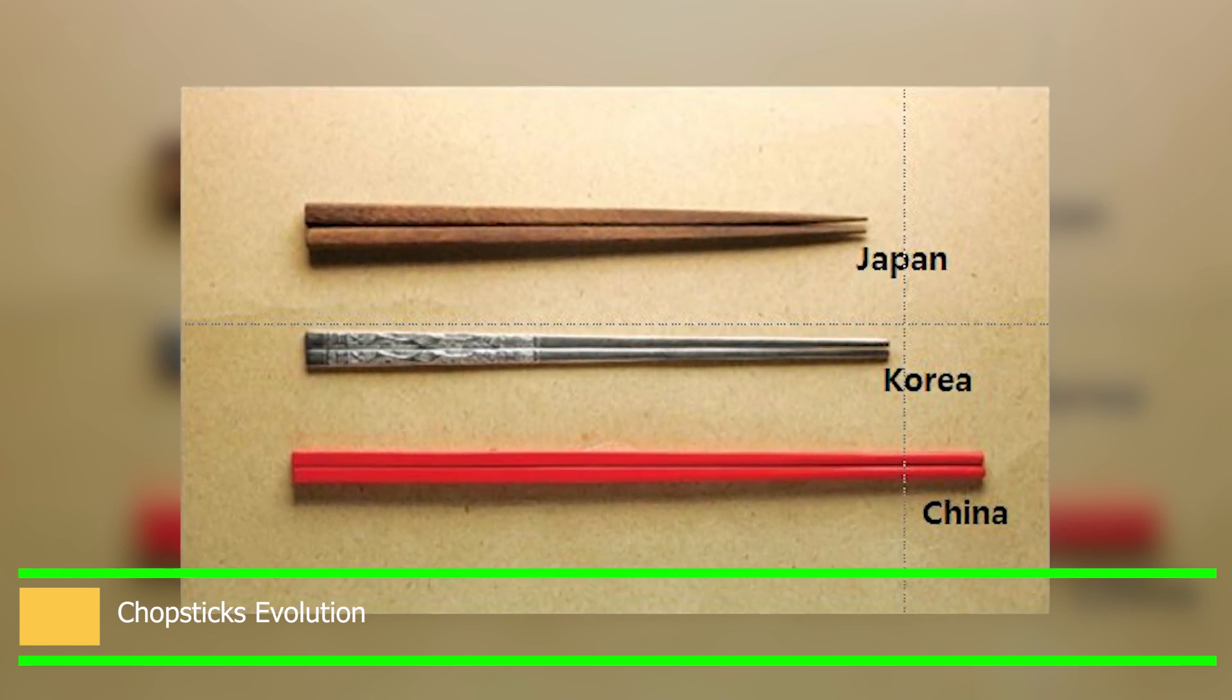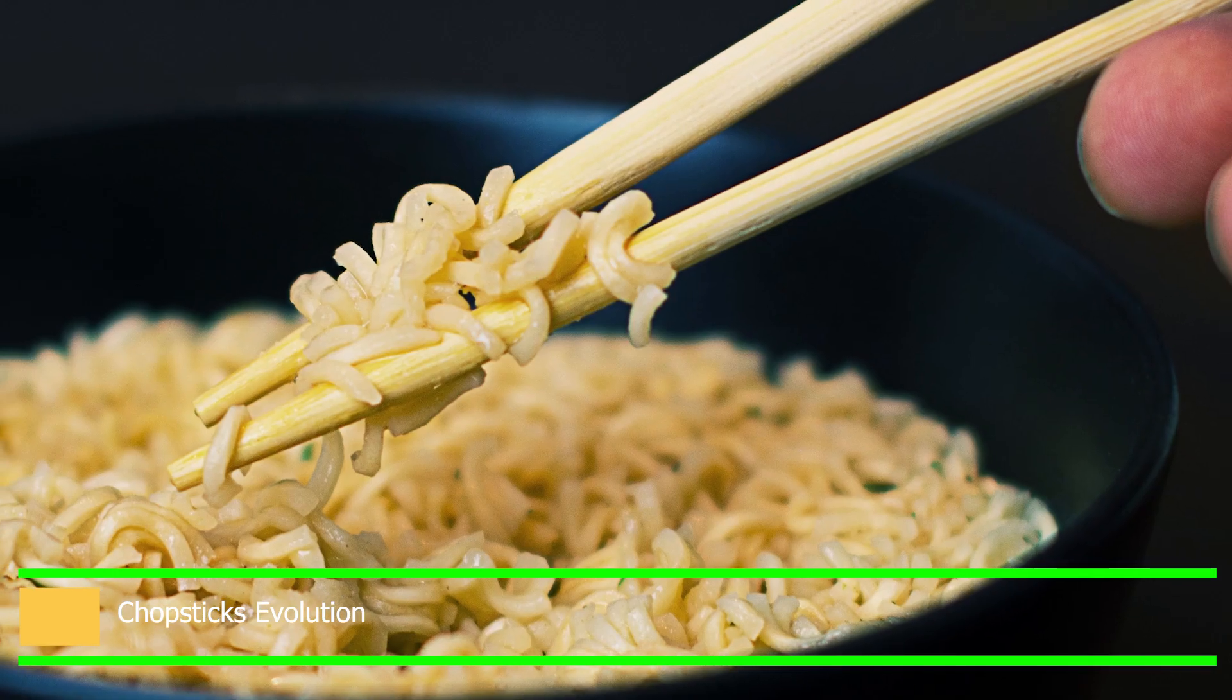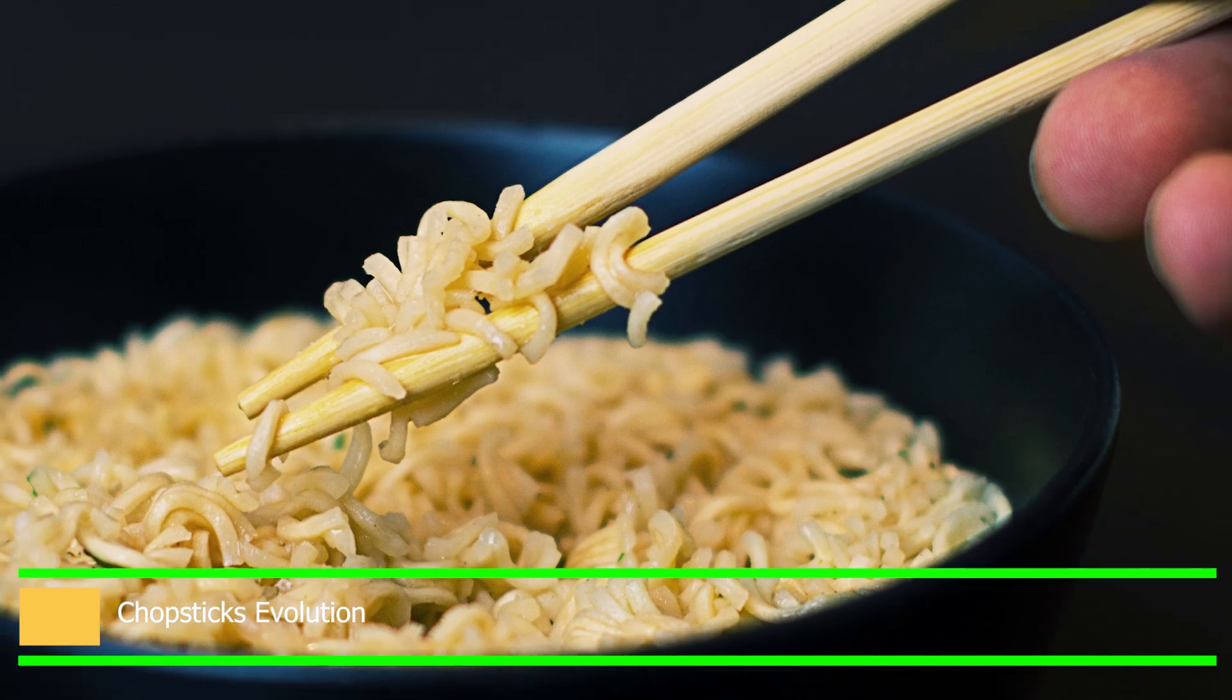Chopsticks arrived in other regions of Asia by the year 500 AD, including Japan, Vietnam, and Korea. The straightforward chopstick design was altered to suit each nation.